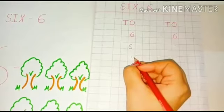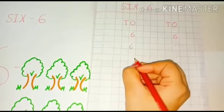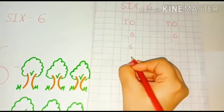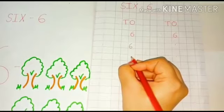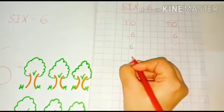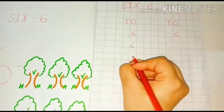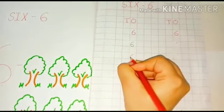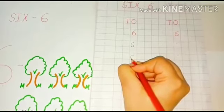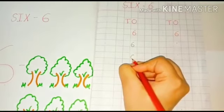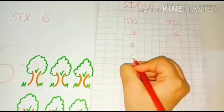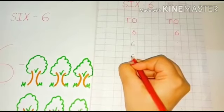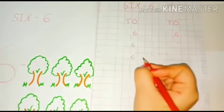Let's do that again. To write the number 6, we will start at the top and do a curve line down to the bottom. And then we will go inside and make it round. Yes.